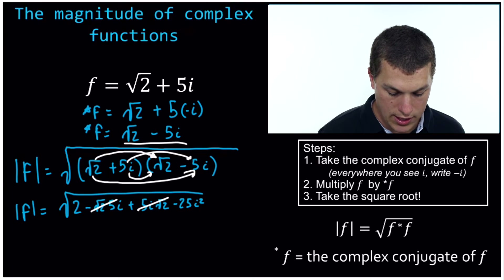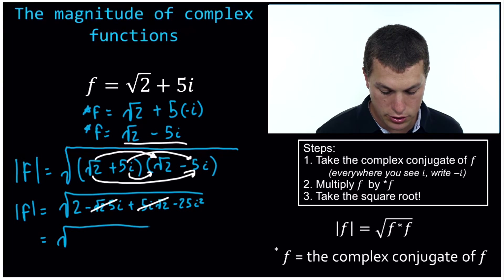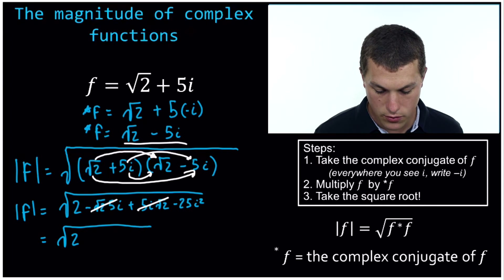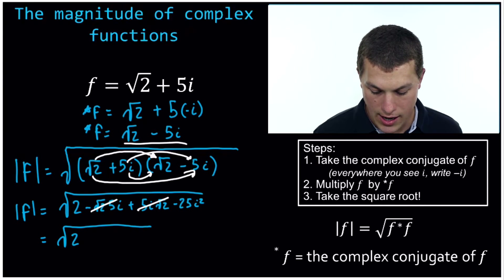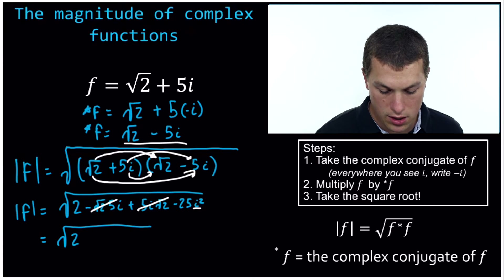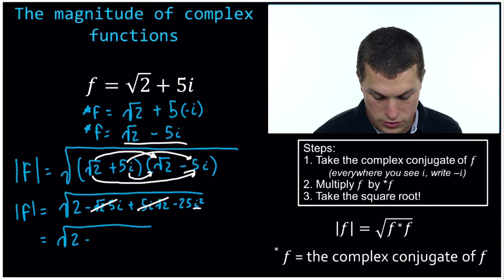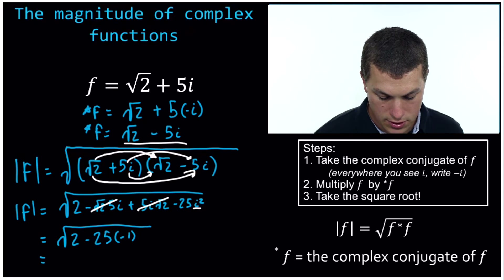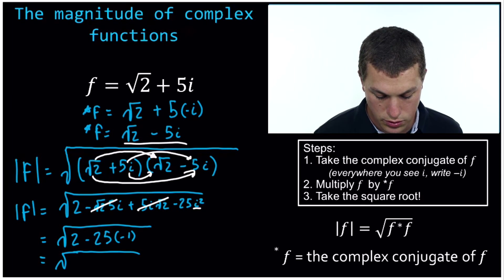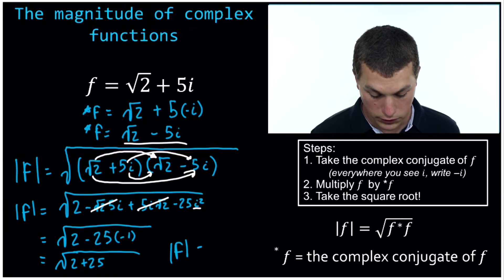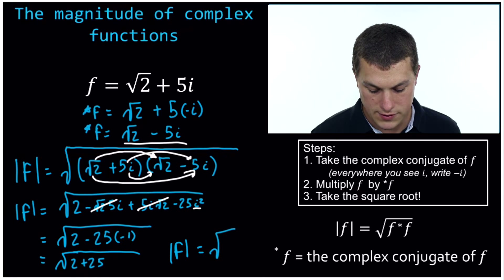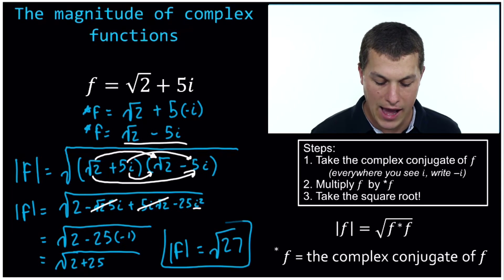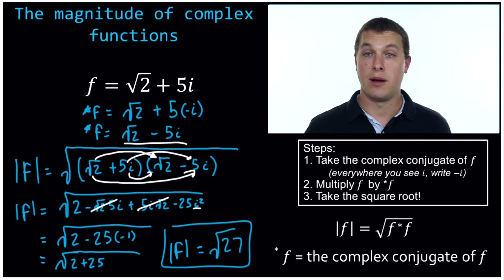So what we're going to get is 2. And then we have to once again remember that i squared is just negative 1. So minus 25 times negative 1 gives us plus 25, meaning we have 2 plus 25. And that means the magnitude of f is equal to the square root of 27. So that is the magnitude of our original complex number.